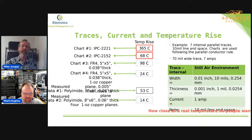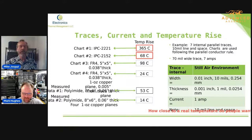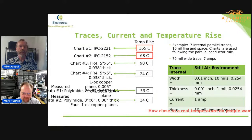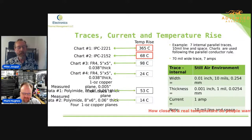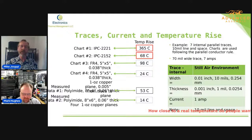Keep bringing those things up. So then, if we go to the trace chart we created — we talked about before the 0.038-inch thick FR4 boards, 5×5 — we know that runs a little bit hotter than IPC-2152, and sure enough we come up with a 98-degree C rise.